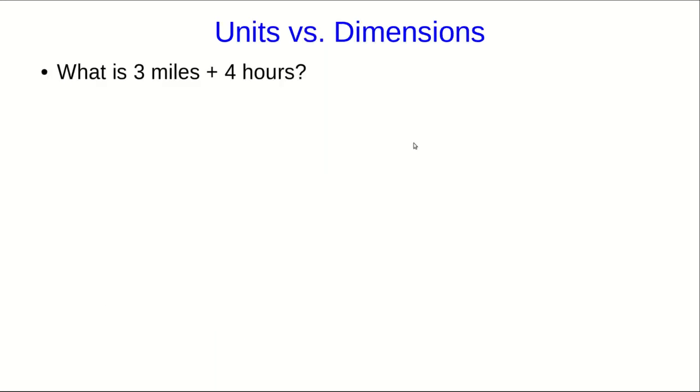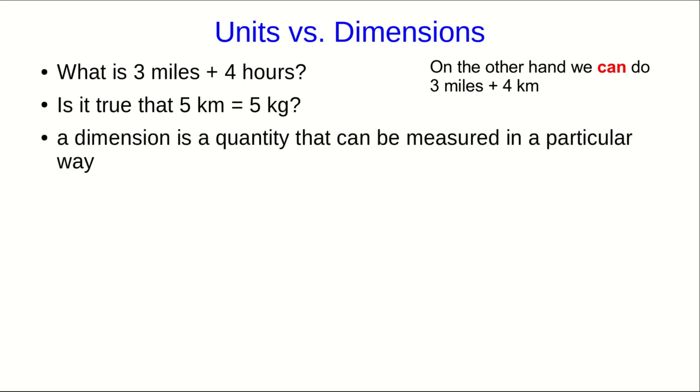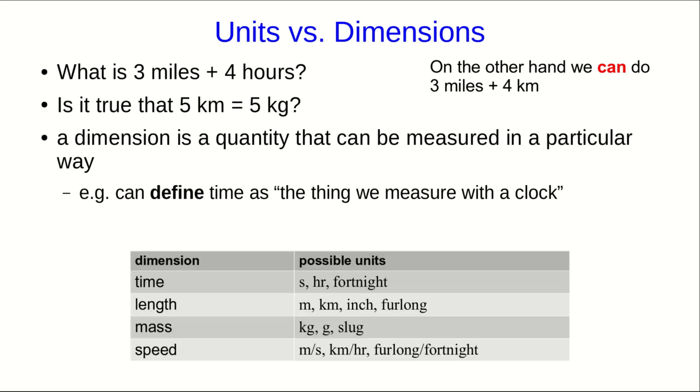What is 3 miles plus 4 hours? Or similarly, is it true that 5 kilometers equals 5 kilograms? Well, I hope you agree that each of these are totally nonsensical. You can't add miles and hours, and you can't equate kilometers and kilograms. On the other hand, you can calculate 3 miles plus 4 kilometers, although you'd better be careful because you'll have to convert the miles to kilometers or the kilometers to miles first before you carry out the addition. The point is that miles and kilometers may be different units, but they are the same dimensions. They are both units of length, and so they're convertible to each other, and so we can add them. A dimension is just a quantity that can be measured in a particular way, so length can be measured with a ruler, time can be measured with a clock. Within any dimension, you have a choice of units, but you can only add or equate quantities that have the same dimension.